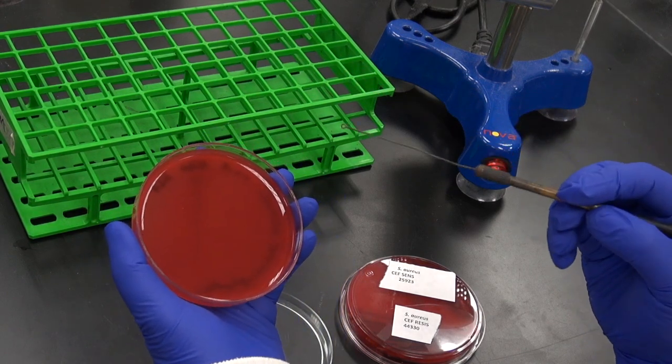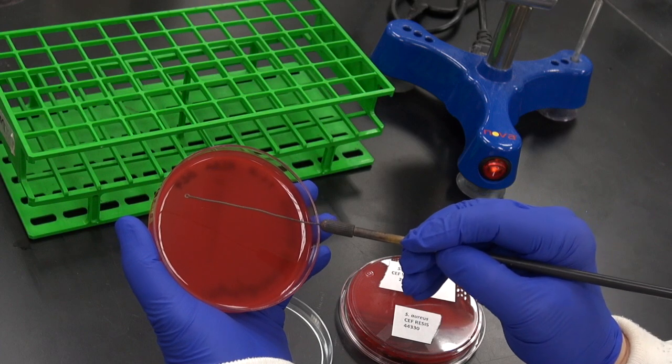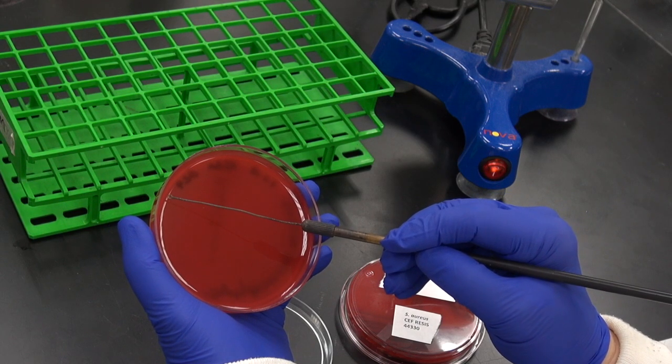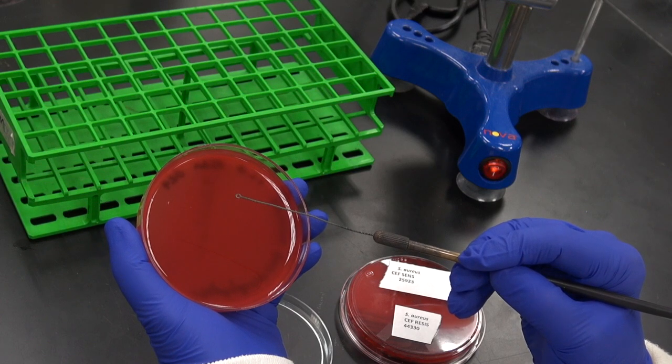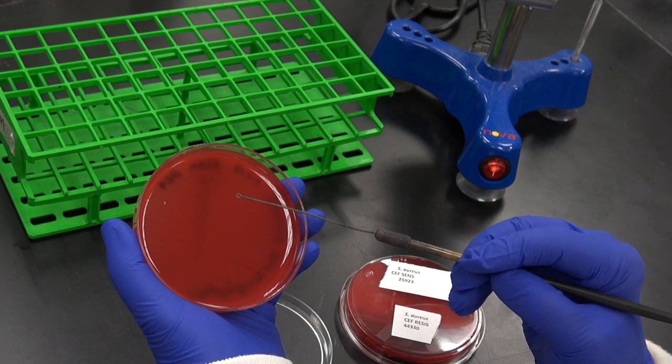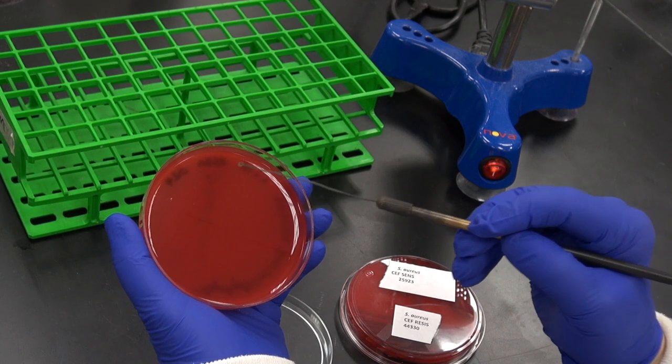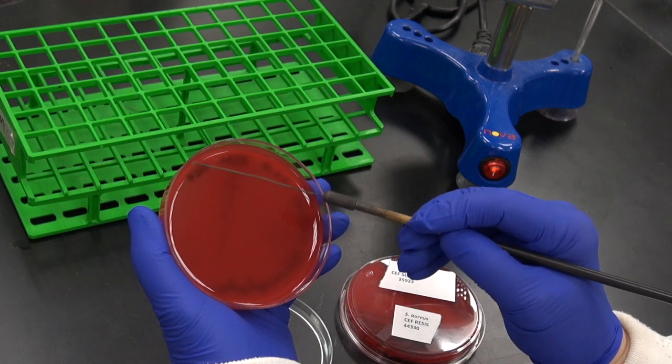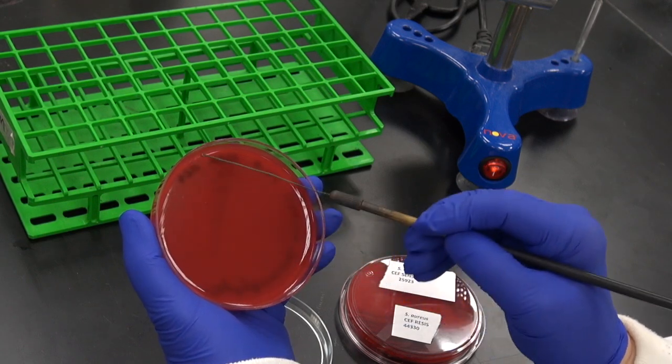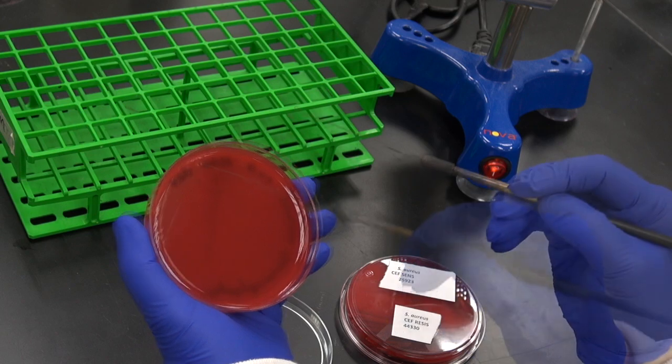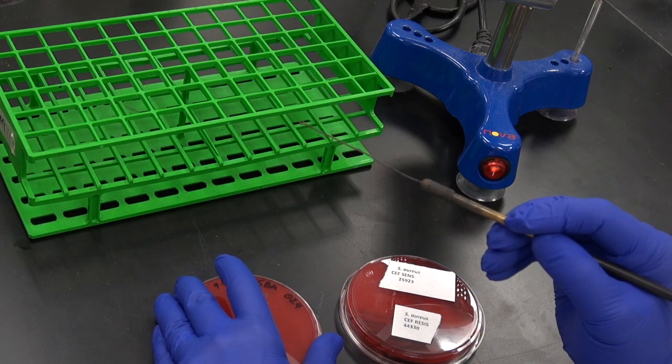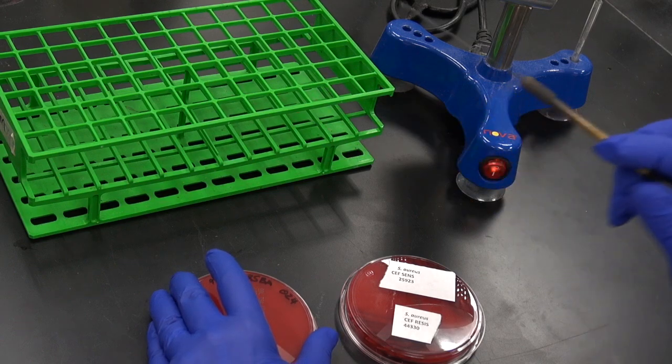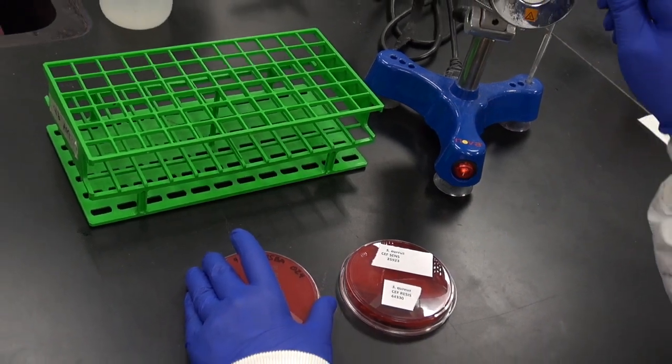Then open the fresh blood agar plate. Transfer the bacteria from the loop to the plate by making a small streak at one edge. Then spread the bacteria on one section of the plate using back and forth motions. This half-moon shaped area is called a quadrant, and this is your first quadrant. Close the plate to reduce environmental contamination.